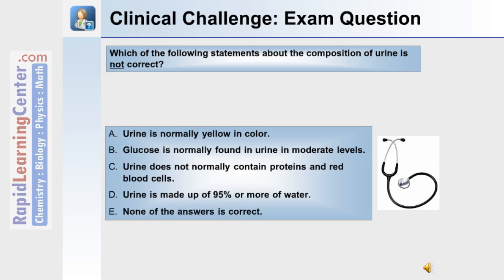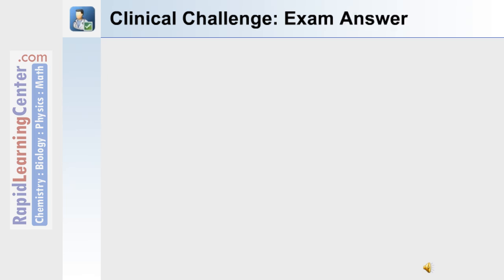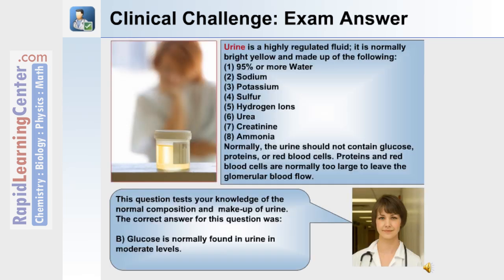Or E) None of the answers is correct. The correct answer is B — glucose is normally found in urine in moderate levels — which is not correct, because below the level of tubular maximum, there should be little to no glucose in the urine.